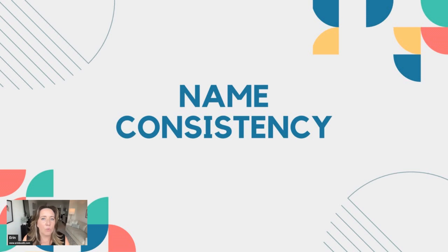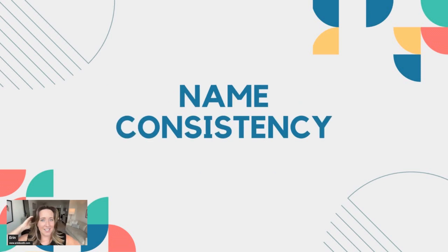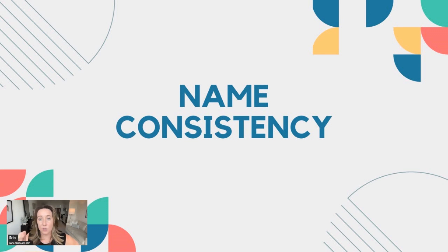The next thing you really want to focus on is a naming schema — I call this naming consistency. Naming consistency is great because you want to start creating a system for your client that is relevant, makes sense, and is easy to read and understand. If you as the VA could label documents so clearly that your client never even had to open the document because they already know what it is, then you have done your job.